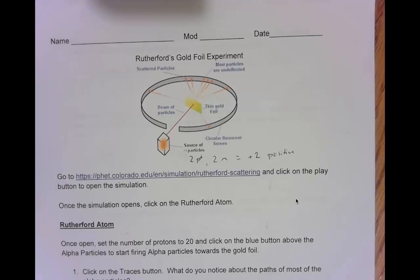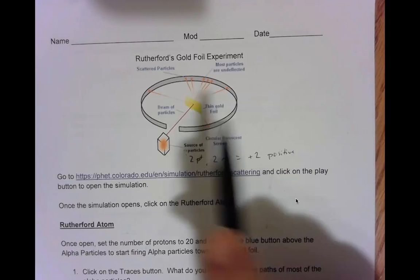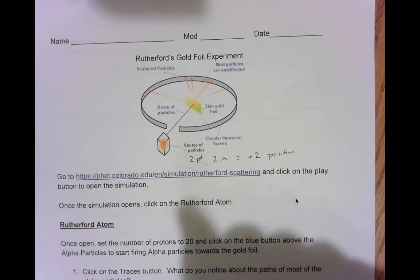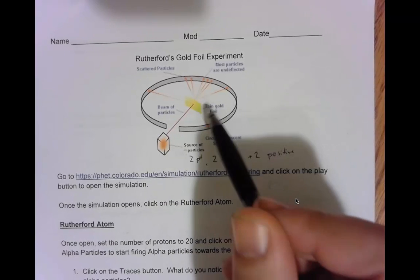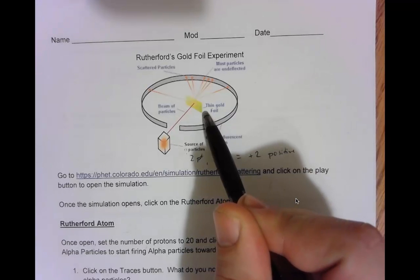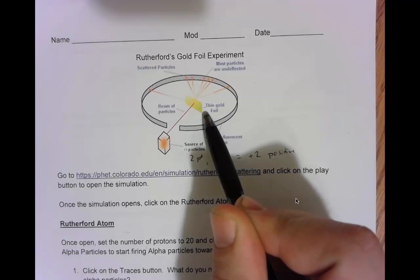To start this simulation, I want to talk a little bit about the experiment that Rutherford created in 1919. He has this thin piece of gold foil in the center. Think about aluminum foil, just instead of being made out of aluminum, this time it's made out of gold.